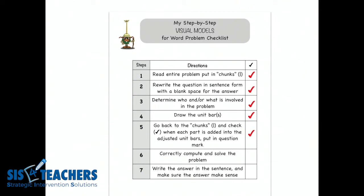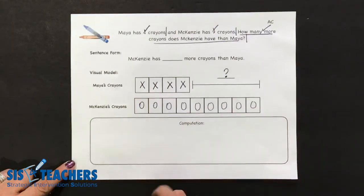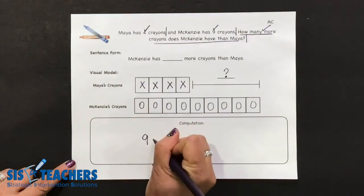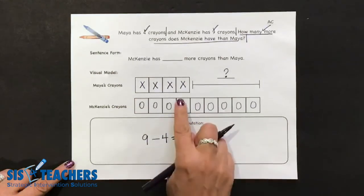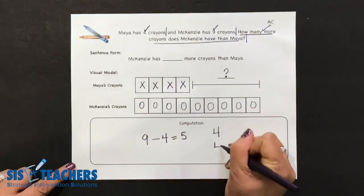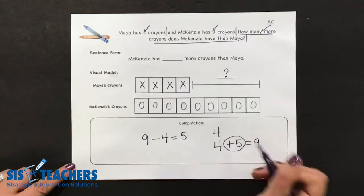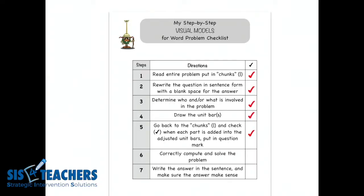It's now time to correctly compute the answer, so we're going to the bottom box to compute. Students can look up at the visual model and count, but we're looking for a number sentence. It might be that Mackenzie has nine and when I take away the equal amount that Maya has I subtract four to come up with five. Or kids might say Maya has four, Mackenzie has four, but then Mackenzie has an additional five to get to her nine. Lots of different ways kids can show computation in the computation box. Kids can use manipulatives as problems get harder, and they can look at the visual model to aid them as they create their algorithm.